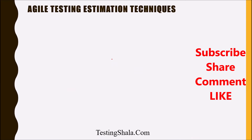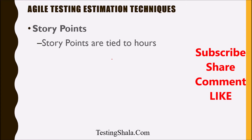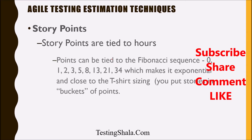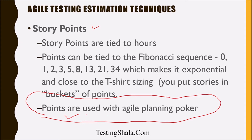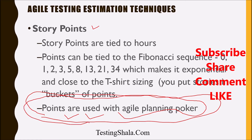The second type of agile testing estimation technique is story point sizing. The story points are tied to man hours. In story point sizing, we normally use the Fibonacci sequence. The Fibonacci series will be 0, 1, 2, 3, 5, 8, 13, 21, 34, and so on, making it exponential and close to t-shirt sizing. Story points are used when doing estimation using agile planning poker.